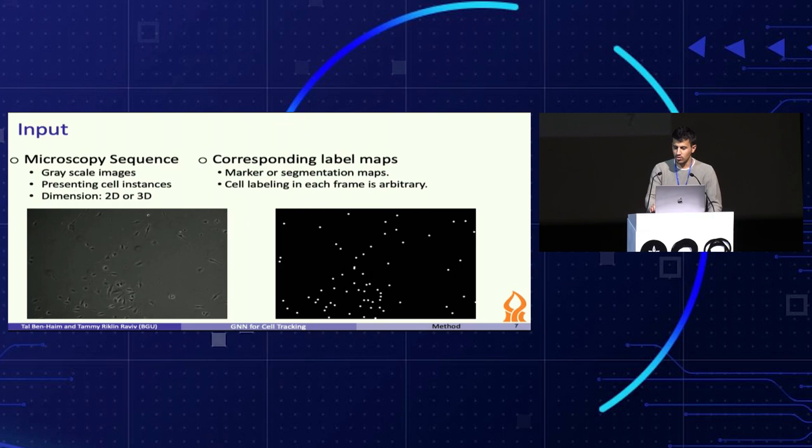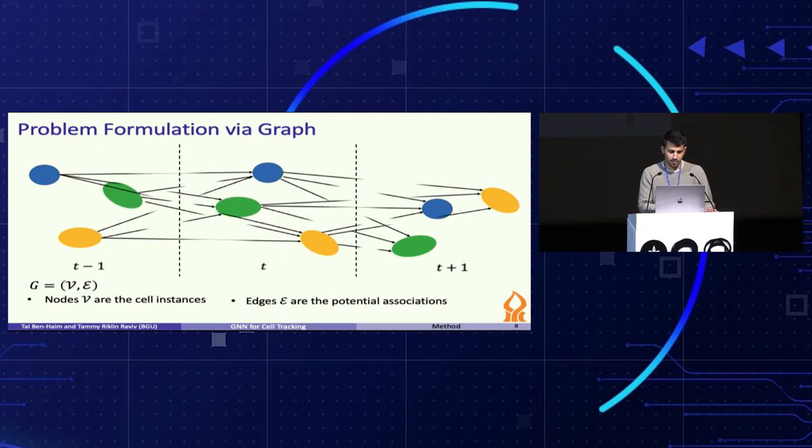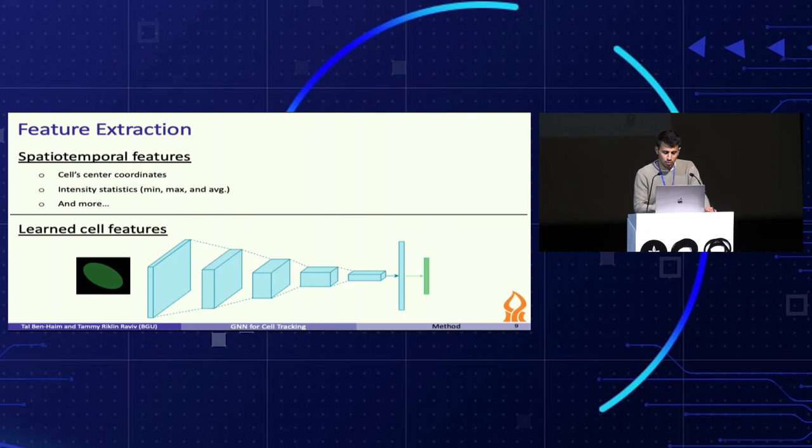The input to our problem is a full microscopy sequence of moving cells along with their annotation or segmentation maps. We represent cell instances and their association using a directed graph G. Cell instances represent the nodes in the graph, while potential associations represent the edges. Our goal is to extract the maximal path in the graph, which represents full cell trajectory by classifying edges into active and non-active. To build the graph representation, spatial temporal cell features are extracted for the nodes, like cell center coordinates and intensity statistics. We also use deep metric learning to learn cell features that allow us to group together instances of the same biological cell while distinguishing between different ones in the embedding space.